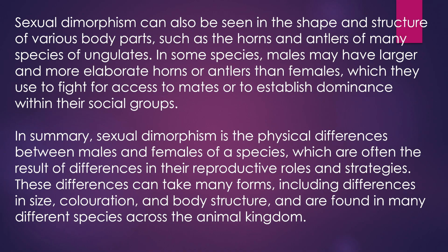Sexual dimorphism can also be seen in the shape and structure of various body parts, such as the horns and antlers of many species of ungulates. In some species, males may have larger and more elaborate horns or antlers than females, which they use to fight for access to mates or to establish dominance within their social groups.